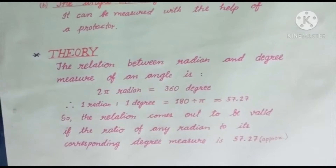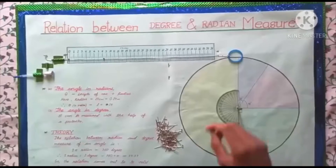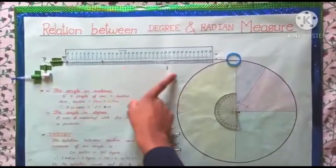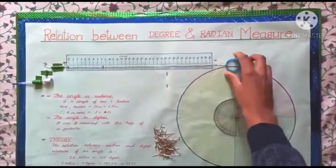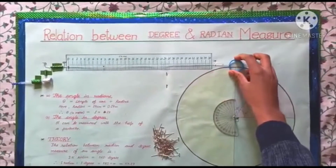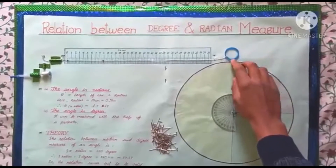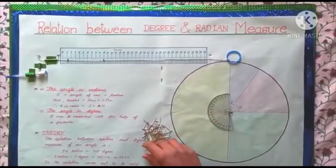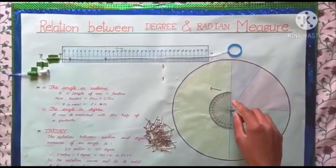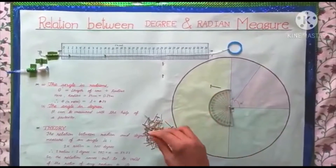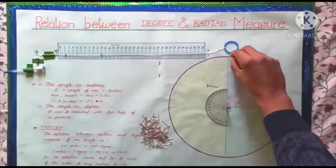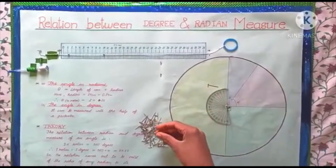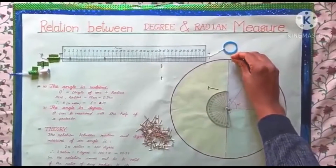We have to show this. This is a scale fitted with a thread, and we have to measure the angle through that line. So we fix pins in the arc of the circle, like that.